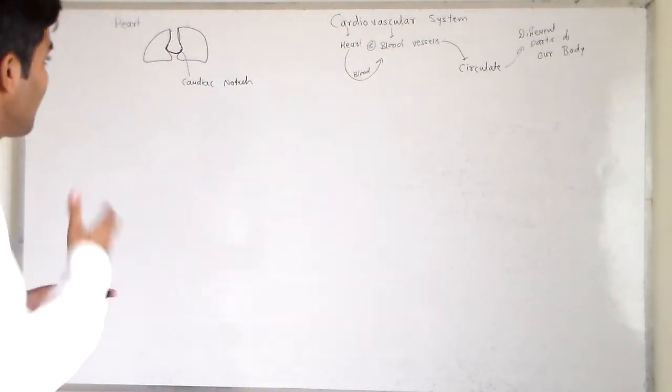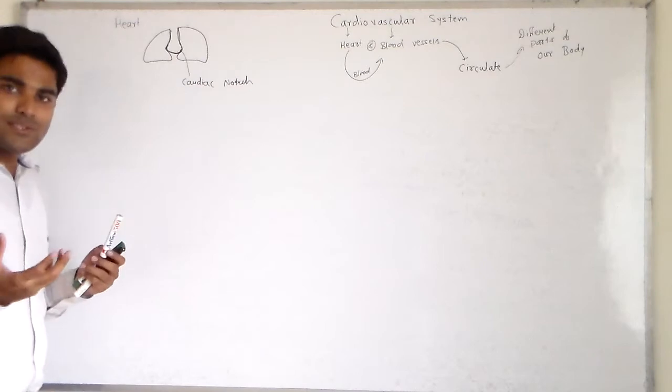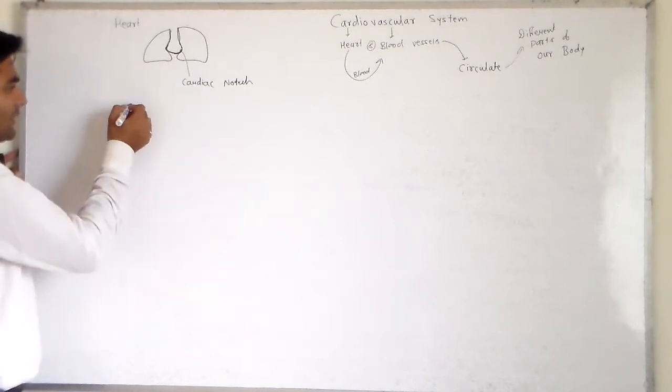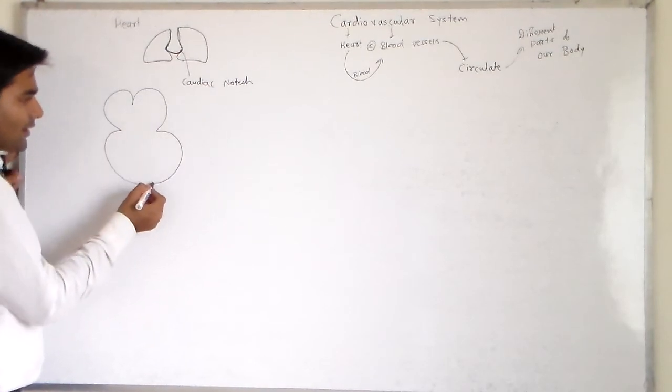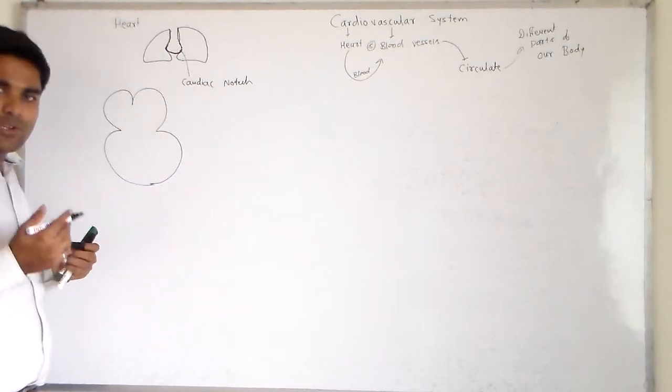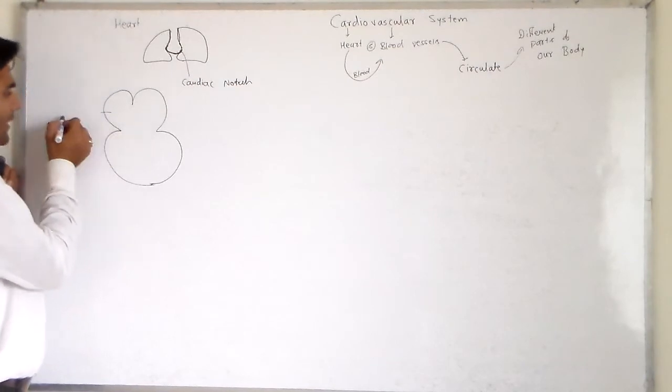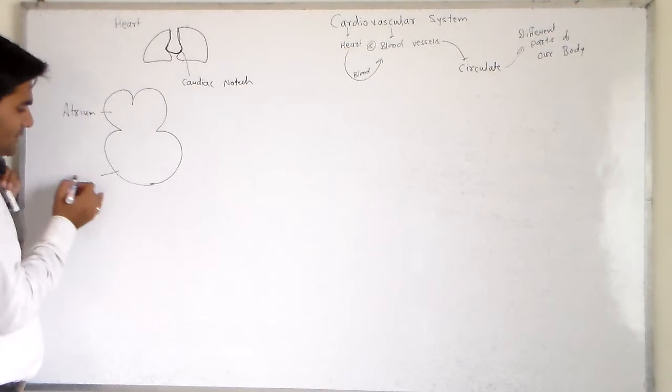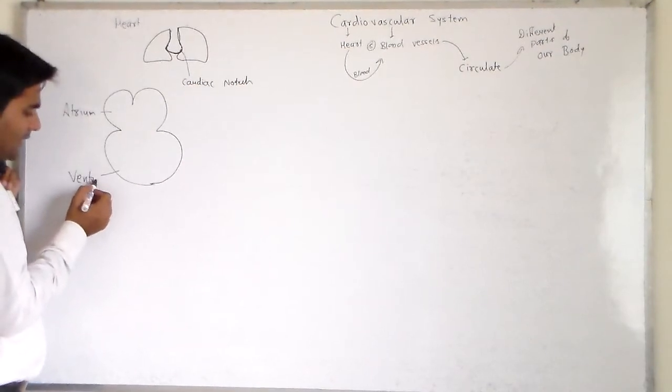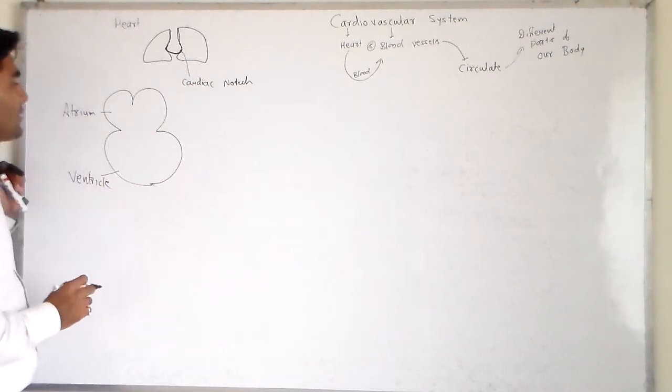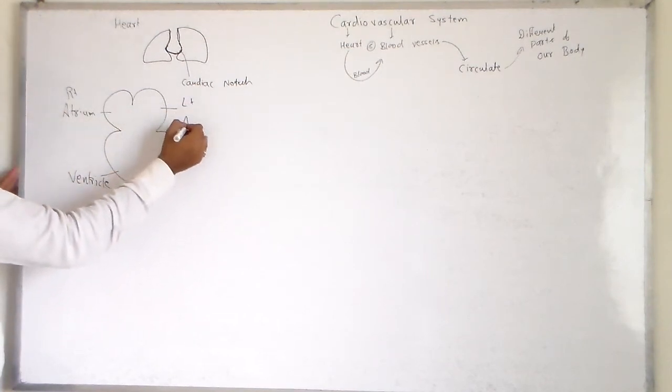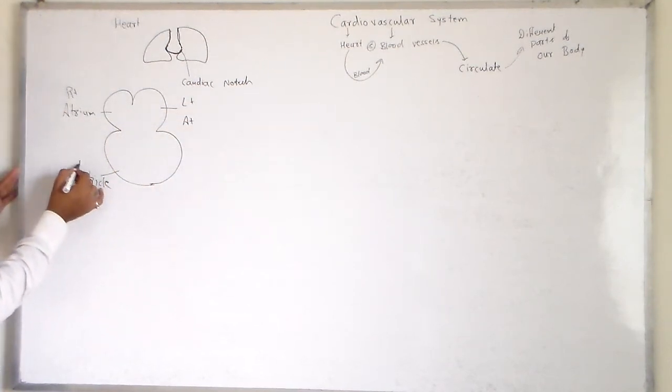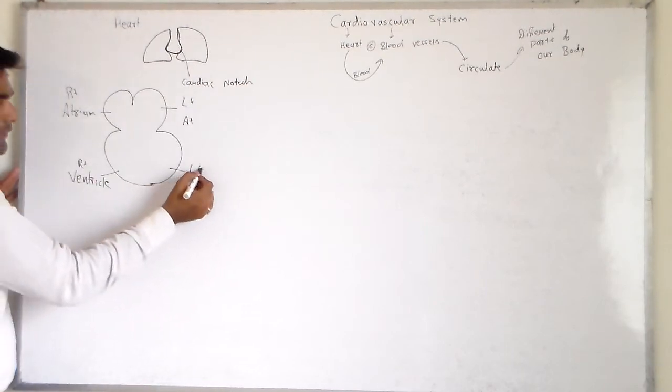My dear friends, heart consists of four chambers. Heart consists of four chambers: atrium and ventricle. Right atrium, left atrium, right ventricle, and left ventricle.